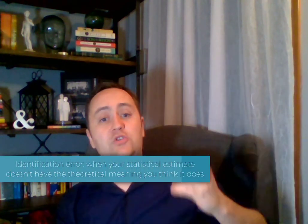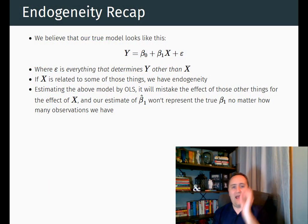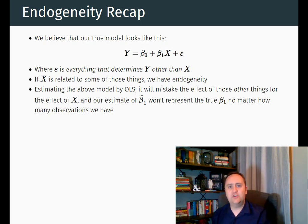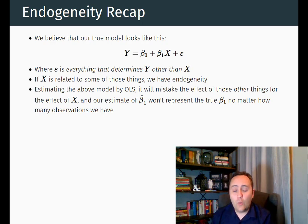We can add controls to help get us to identification. So first, a recap of what endogeneity is. We have y as an outcome variable, and there's a linear relationship between y and x. By linear relationship, I mean we are drawing a straight line. There's an intercept to that line — the beta zero — and there's a slope to that line — the beta one.